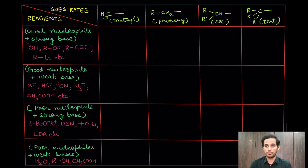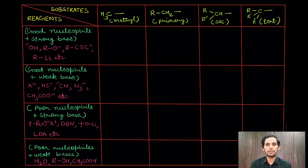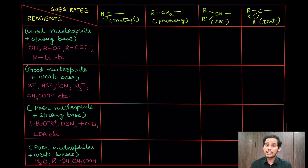Let us start with methyl — the simplest case. Methyl does not have any beta carbon, so there is no beta hydrogen, meaning no chance of beta elimination. So E1 and E2 are ruled out. SN1 is also ruled out because methyl carbocations are very unstable. The only option left is SN2. So with a good nucleophile and strong base on a methyl substrate, SN2 is the best and only viable option.